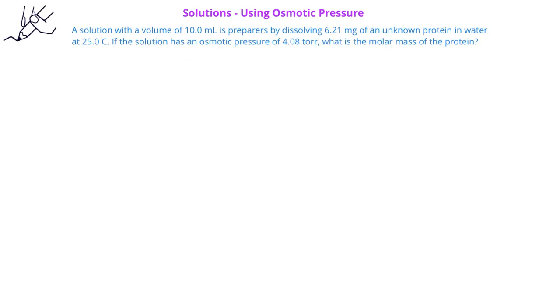In this problem, we're told that a solution is prepared by adding 6.21 milligrams of a protein to 10.0 milliliters of a solution at 25.0 degrees Celsius. If the solution with a protein has an osmotic pressure of 4.08 torr, what is the molar mass of the protein? Now, in this problem, we recognize that we're given an osmotic pressure, so we should recognize that we will need to use one of the osmotic pressure equations. Since we're given a volume, we'll probably use πV equals nRT.